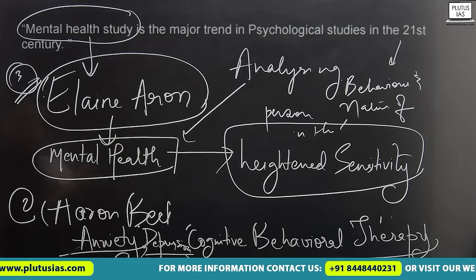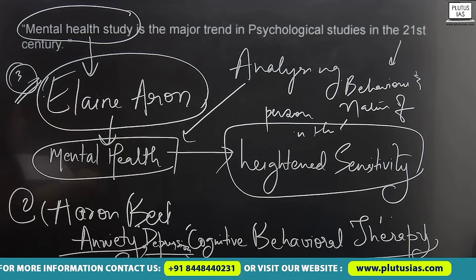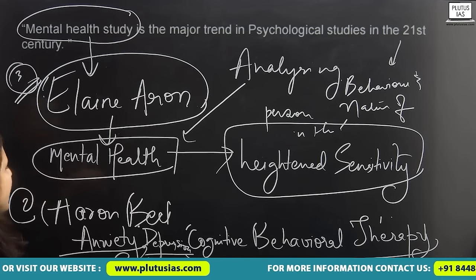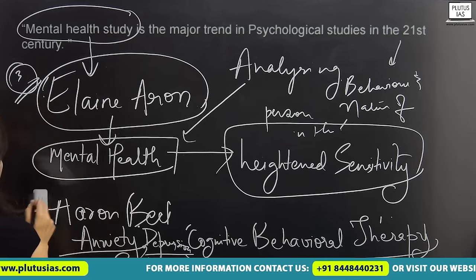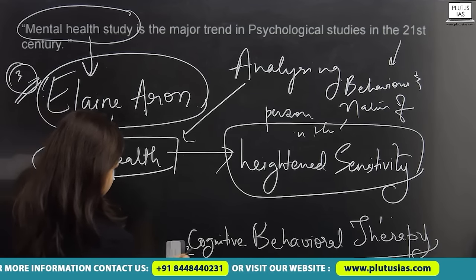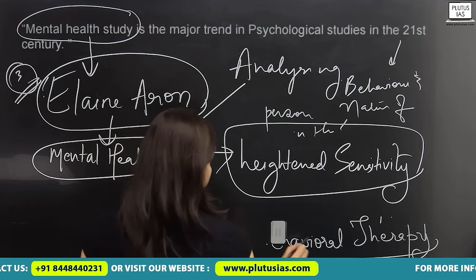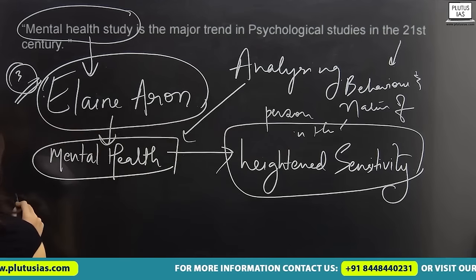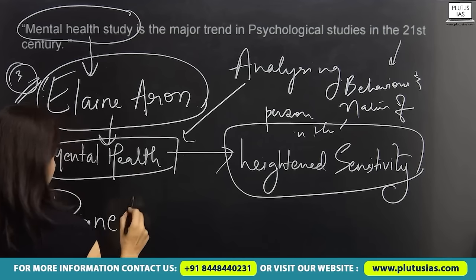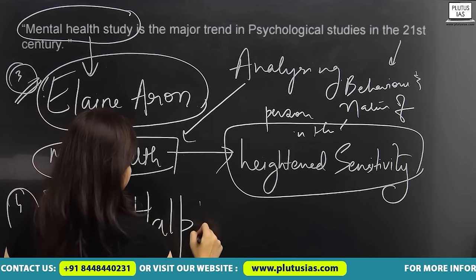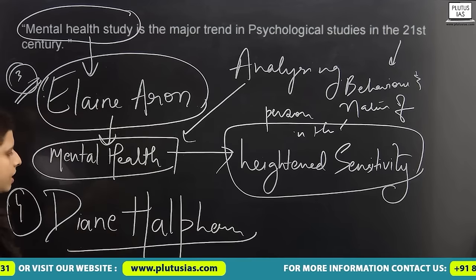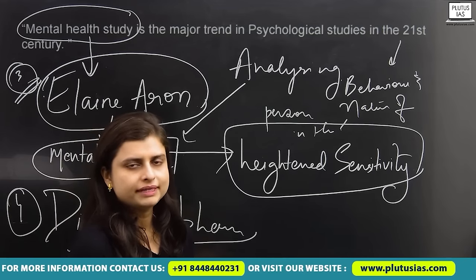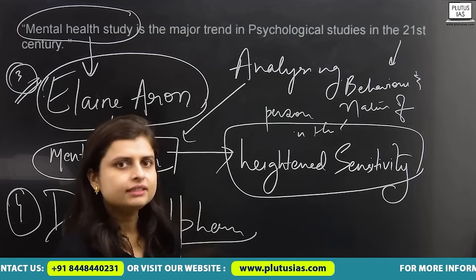I talked about Aaron Beck, Elaine Aron, and Martin Seligman. Now I'm going to talk about Diana Halpern. Diana Halpern has emphasized critical thinking. If a person is going through any mental health issues, what they need to do is critically analyze the situation. Once they are critically analyzing the situation, they can to some extent manage their mental health.